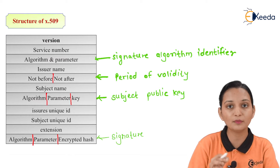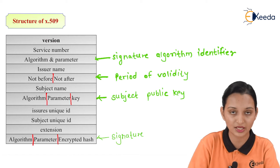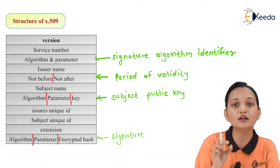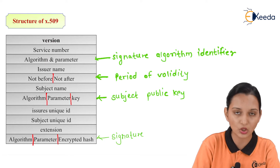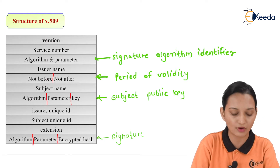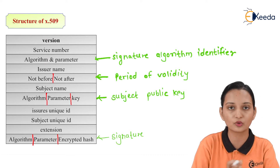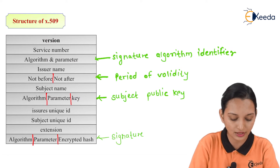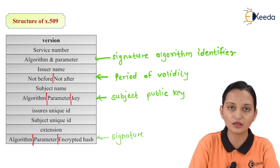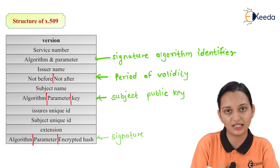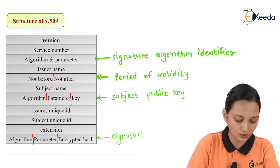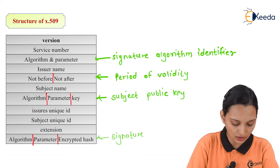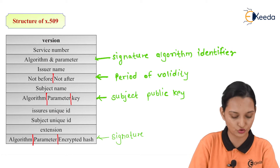Such a large number of parameters are present to do the authentication process. Here, a few parameters are combined — for example, 'not before' and 'not after' are combined and referred to as the period of validity. Algorithm and parameter are two different things, but they are combined and represented as the signature algorithm identifier. Algorithm parameter key is known as the subject public key, and algorithm parameter encrypted hash is known as the signature.